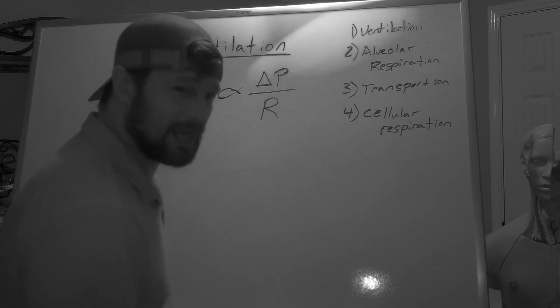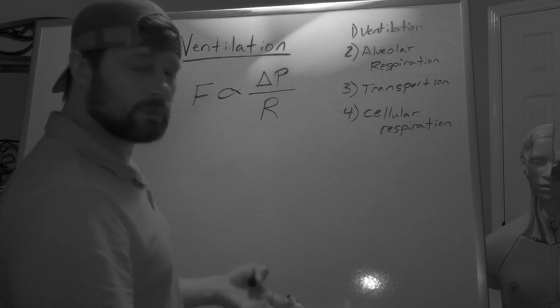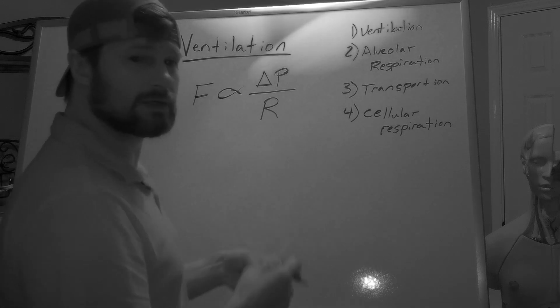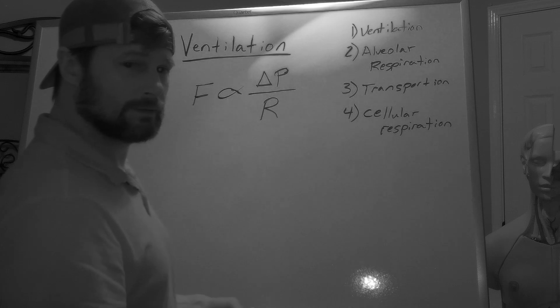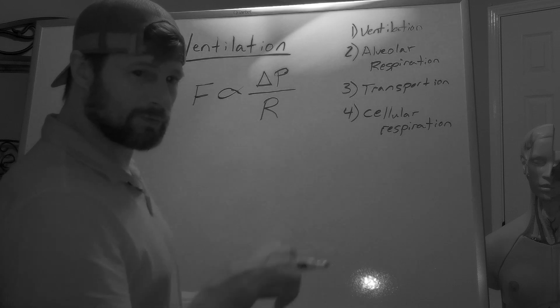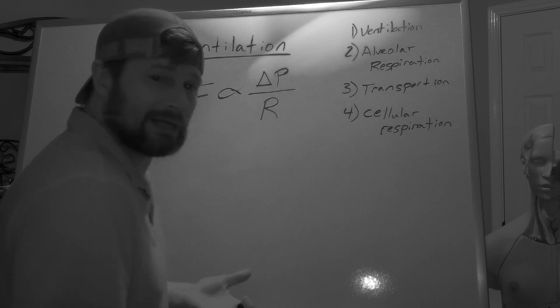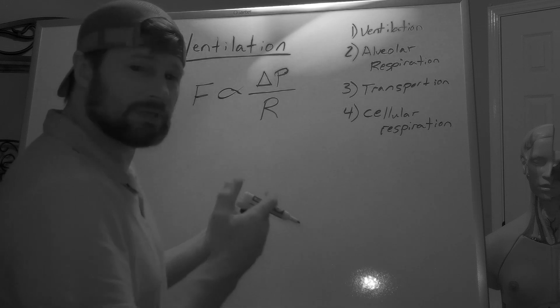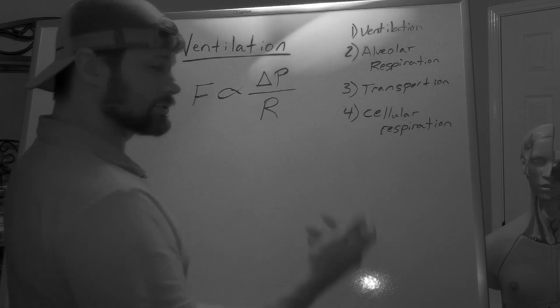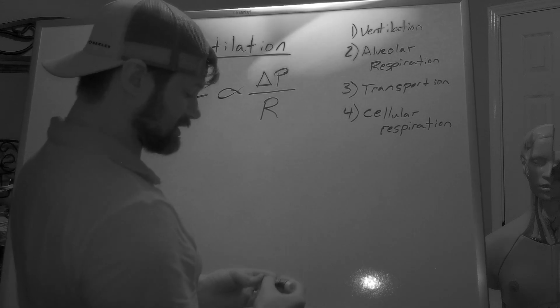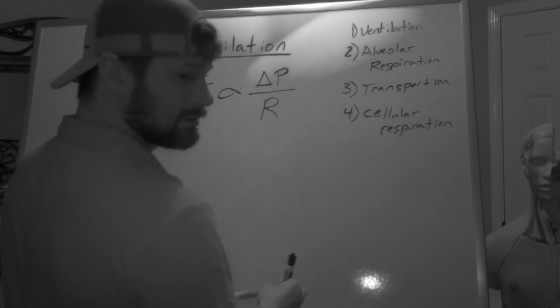So the first step in understanding this is to understand what creates the pressure gradient in the first place. Well, we can't even do that yet because we need to make sure that our lungs are inflated first and foremost. If the lungs are not inflated, really important point, if the lungs are not inflated, how the hell are we going to get air in and out of the lungs? There's going to be no flow. So we must inflate those lungs first. And what's going to allow for the inflation of those lungs?